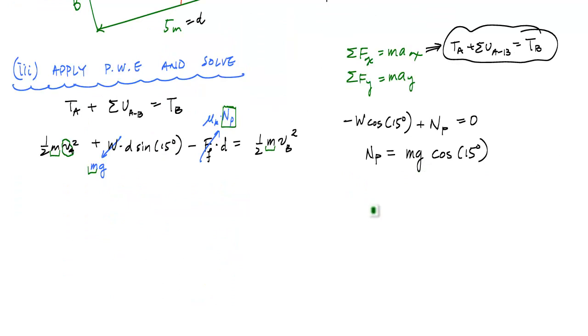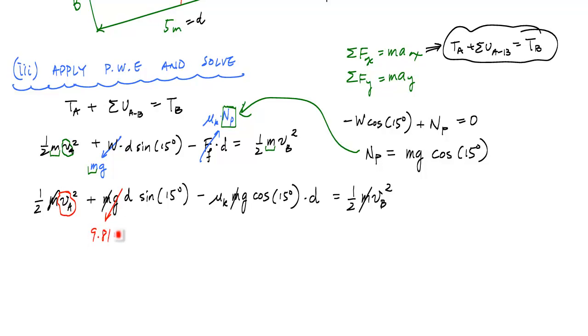With this equation for the normal force, we can substitute that into our principle of work and energy. Every term has a mass, so we can cancel that out. We know VA is what we're trying to solve for. We know g is 9.81 m/s², D is 5 meters, μK is 0.3, D is 5 meters, and VB is 2 m/s. Work out the algebra, solve for VA, and we get VA equals 2.653 meters per second.